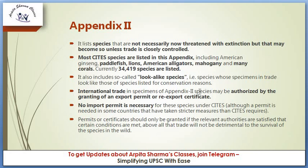International trade in specimens of Appendix 2 species may be authorized by the granting of an export permit or re-export certificate. No import permit is necessary for these species under CITES, although a permit may be needed in some countries that have taken stricter measures. Permits and certificates should only be granted if relevant authorities are satisfied that trade will not be detrimental to the survival of the species in the wild.